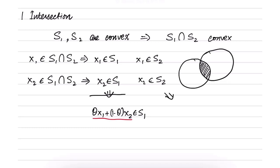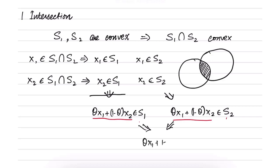Likewise, X2 also belongs to S1 and X2 belongs to S2. Using the fact that S1 and S2 are both convex, theta times X1 plus (1 minus theta) times X2 belongs to S1, and also to S2. Combining these two, theta*X1 + (1-theta)*X2 belongs to S1 intersection S2, hence S1 intersection S2 is convex.